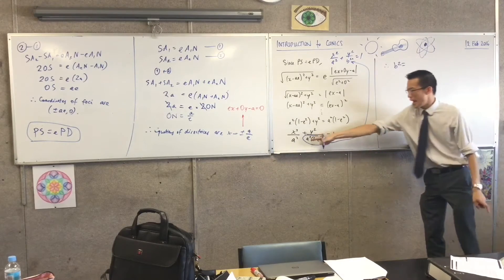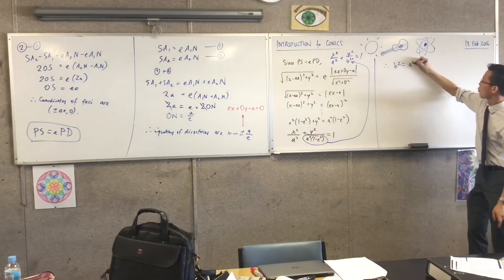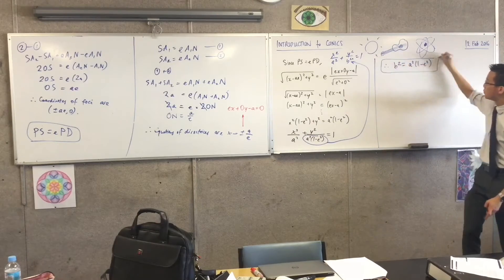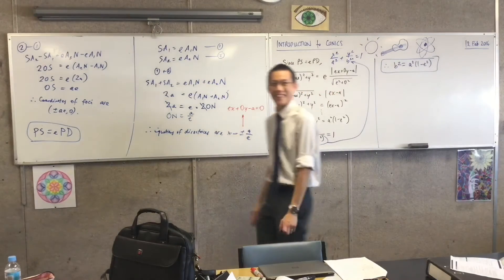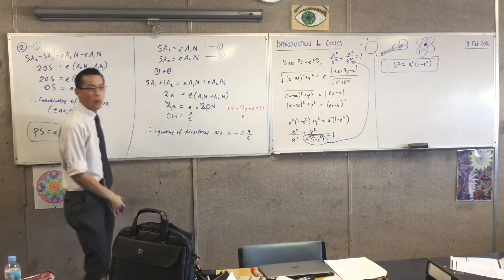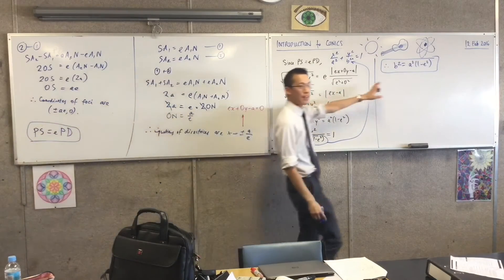A squared is equal to a squared times one minus e squared. Put a big box around that guy. That's a huge job. We had to go through a lot of work to get all the way there.